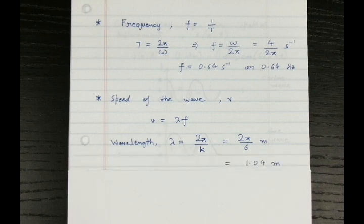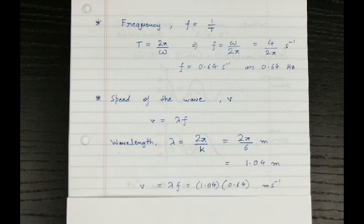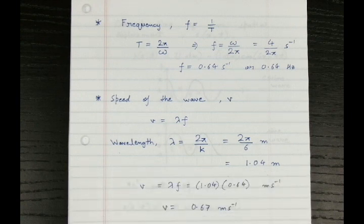So we know our wavelength is 1.04 meters. So just putting the wavelength and the value for frequency, we find that our velocity is equal to 0.67 meters per second.